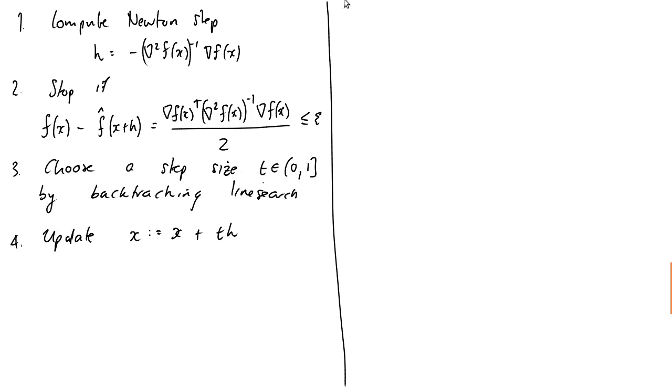Okay, now I keep mentioning this backtracking line search idea. So let's just quickly explain what that looks like. So backtracking line search. I'm not going to spend time explaining the algorithm in any detail here. But what it does is it basically ensures that we get a sufficiently large decrease in our function without making our step size too small.